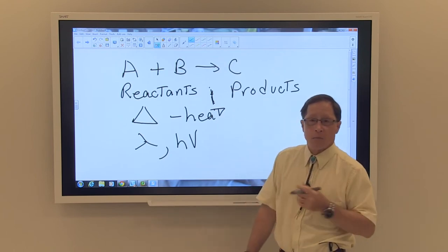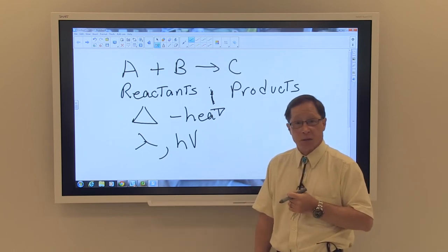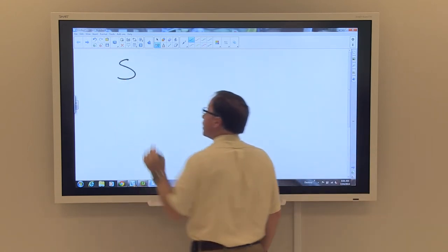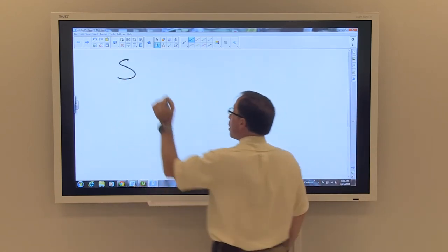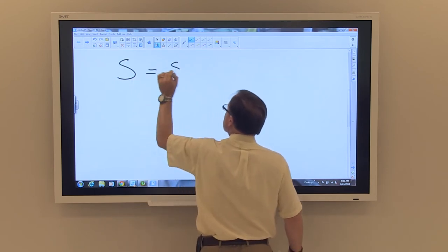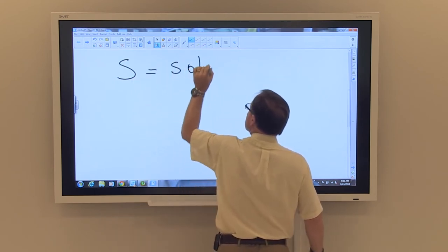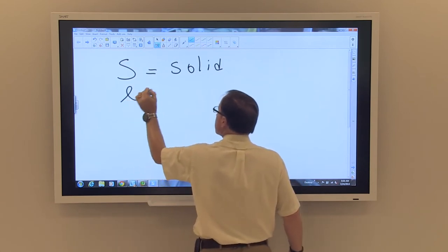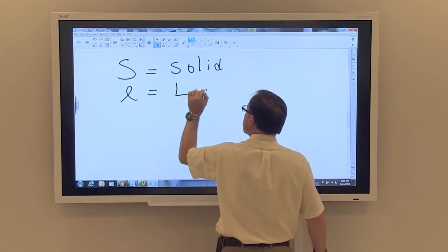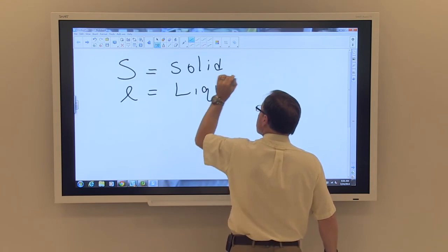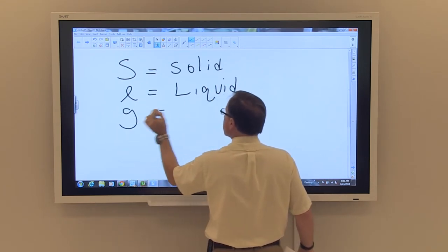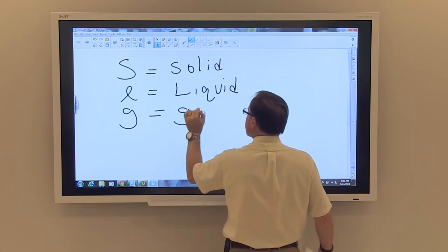Also, when you have a reaction, you indicate what the states of your reactants are. S stands for solid, L is for liquid, and G is for gas.